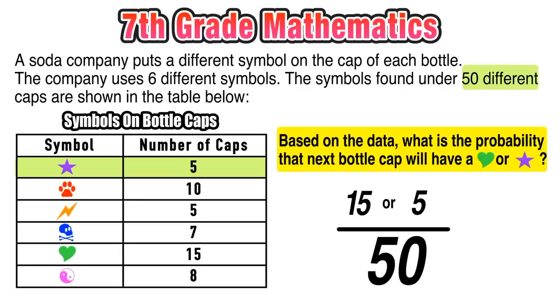When we say "or" that means we are cool with either a green heart or a purple star, either one is fine. So we want to add those two numbers together, whose sum 15 plus five is 20.